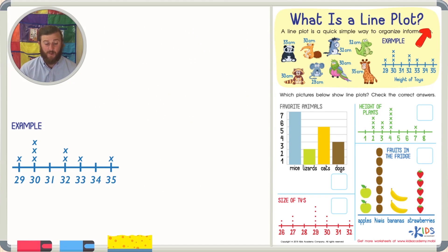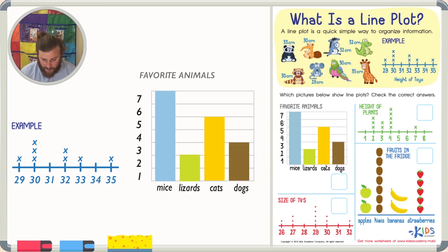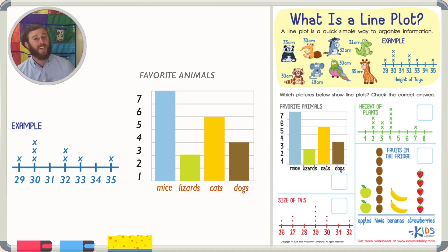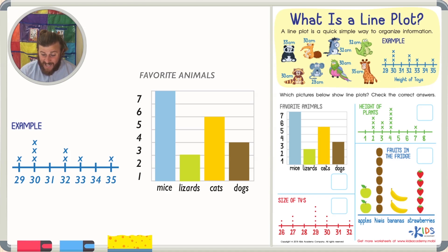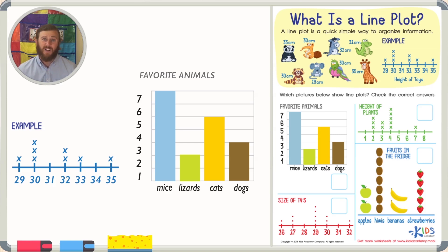Let's read the directions: which pictures below show line plots? Check the correct answers. The first graph shows everyone's favorite animals — mice, lizards, cats, and dogs. Although it's a nice way to display information, it is not a line plot. It doesn't have numbers on the bottom, and it has colorful bars instead of X's. This is actually called a bar graph.